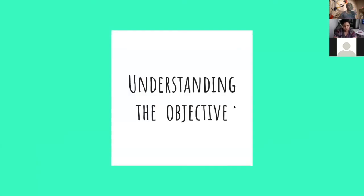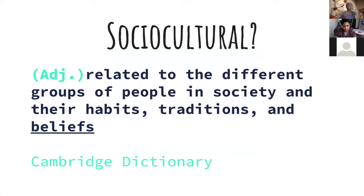Let's break down the word 'sociocultural.' From the Cambridge Dictionary, sociocultural is an adjective related to the different groups of people in a society — for debate purposes, a group of people — and their habits, traditions, and beliefs. We're going to apply these three pieces — habits, traditions, and beliefs — to the landscape of what we know exists in debate for affirmatives.